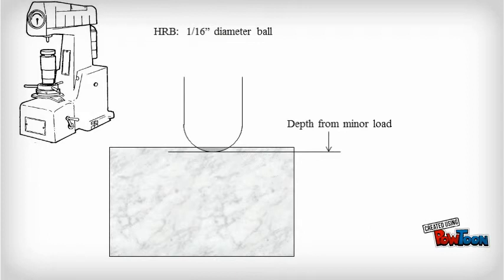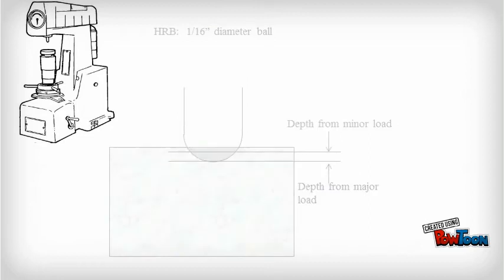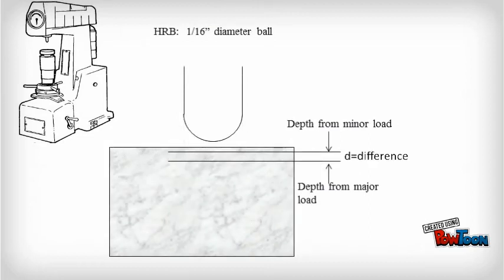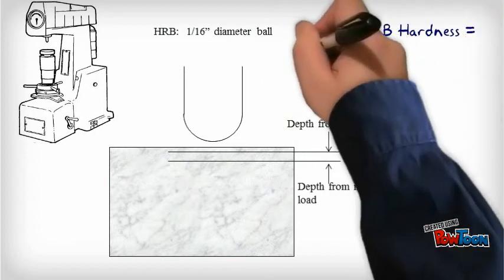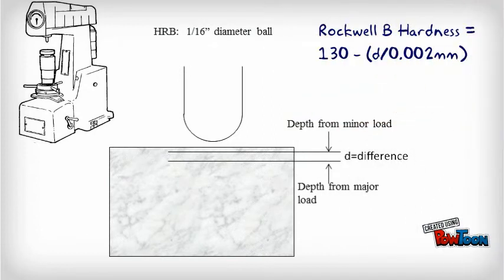An additional 90 kilograms or 200 pounds of force is applied and then removed. The difference in penetration depth between these two loads is measured automatically by the test equipment, and then is plugged into a standard equation where the output is the Rockwell B hardness.